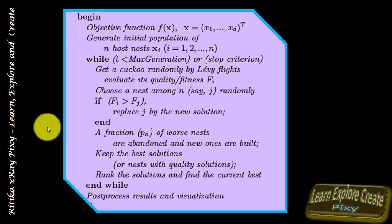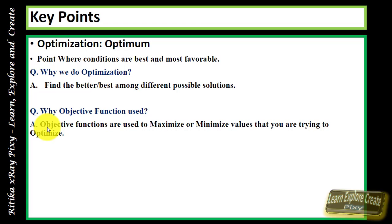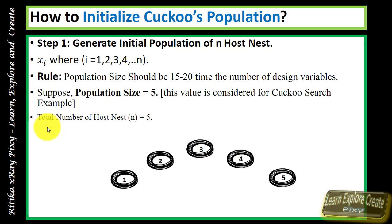Optimization means finding the point where conditions are best or most favorable — we are trying to find the better or best solution among all. The objective function is used to maximize or minimize the values we are trying to optimize. The first step of this algorithm is to initialize the population of N host nests. The rule is that the population size should be 50 to 20 times the number of design variables. In this video I will take population size of 5.